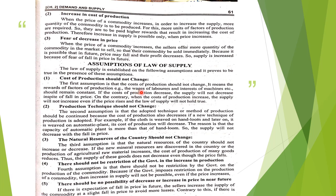When the price of raw materials, wages of labor, and interest on machinery decrease, the law will not hold. Production technique should also not change — if a person was producing goods using an old technique, his cost of production will be different. If the technique changes, he can produce bulk commodities and offer more goods at a lower price, so the law will not hold. Similarly, natural resources should not change. Remember: assumptions means these conditions should be fixed. If these conditions change, the law of supply will not hold.